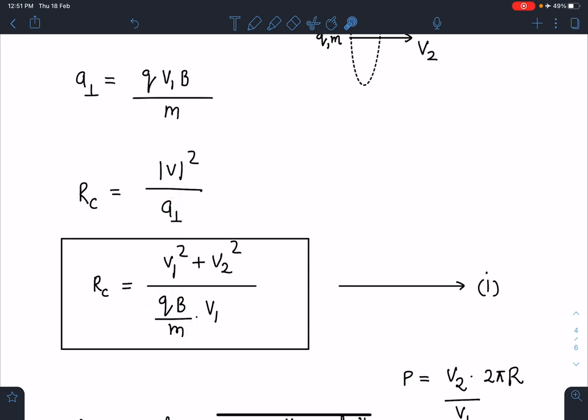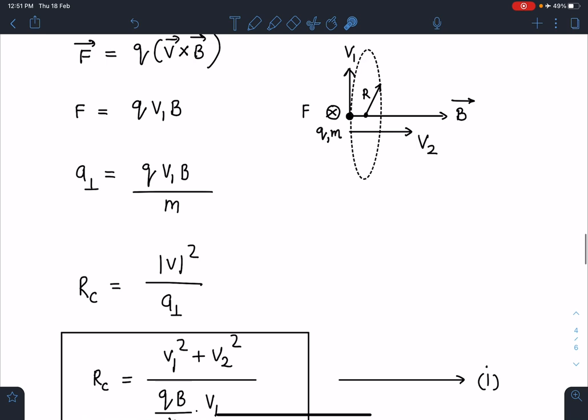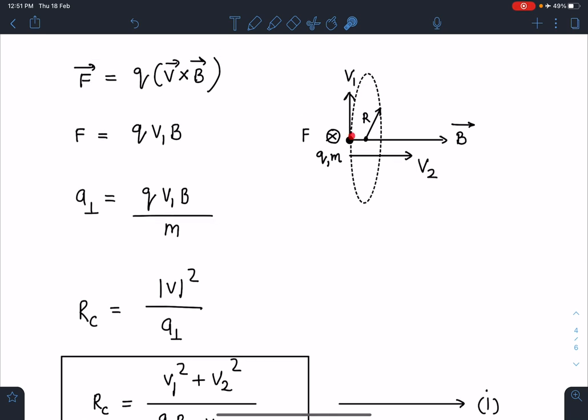Now somehow I have to eliminate this qB/m. So I'll go slightly into the motion of this charged particle. Since it is moving with a speed of v₁ in a circle of radius R, definitely this force must be pointing towards the center of such circle.